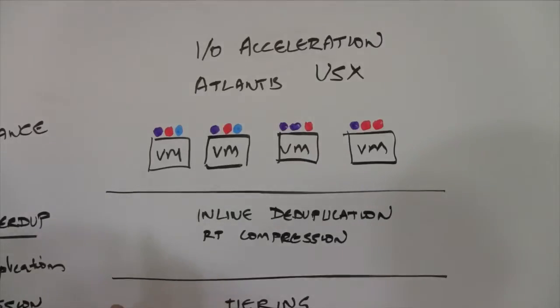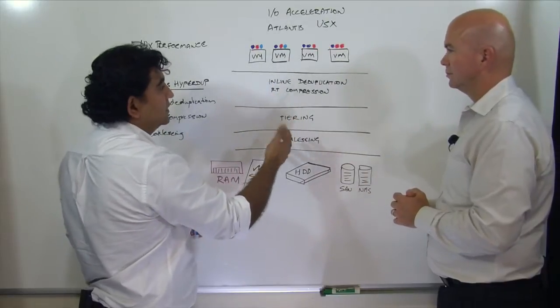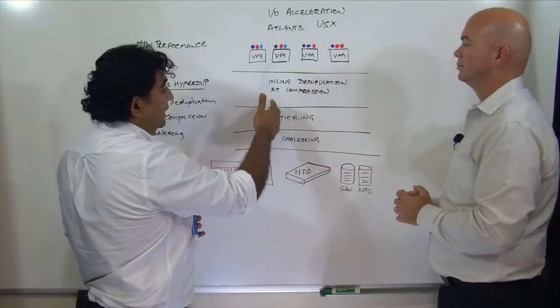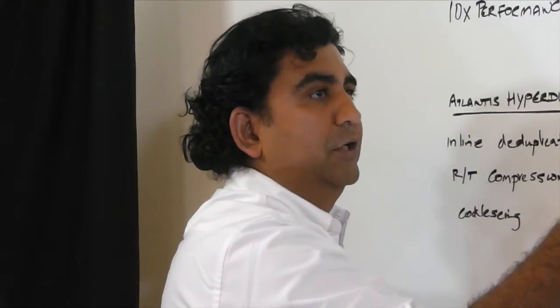So one of the things that we do in our tiering is take that awareness of which blocks are shared by which VMs and how regularly they're accessed to completely change the way data is tiered and the data is relegated down into the capacity tier or moved up into the performance tier.